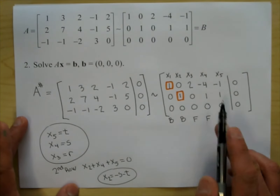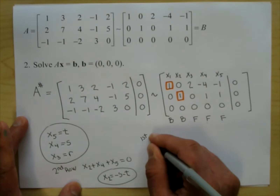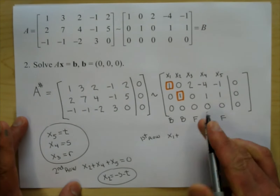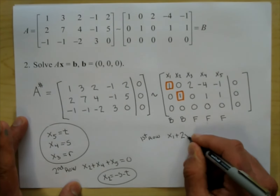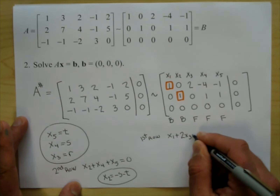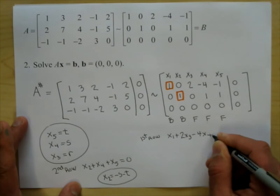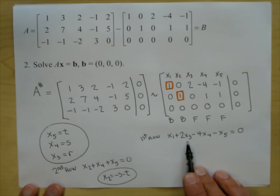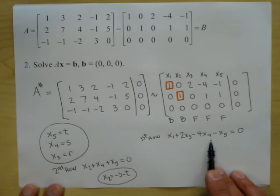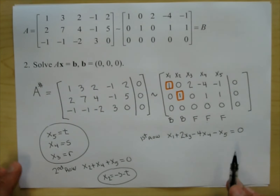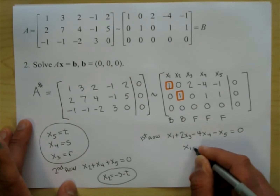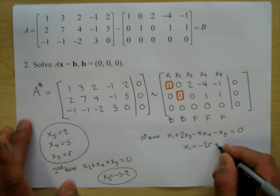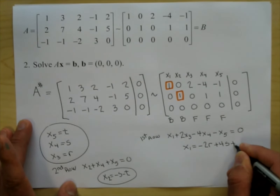The first row gives me the equation x1 plus 2x3 minus 4x4 minus x5 equals zero. I replace x3 with r, x4 with s, and x5 with t, and bring them to the other side, so x1 equals negative 2r plus 4s plus t.